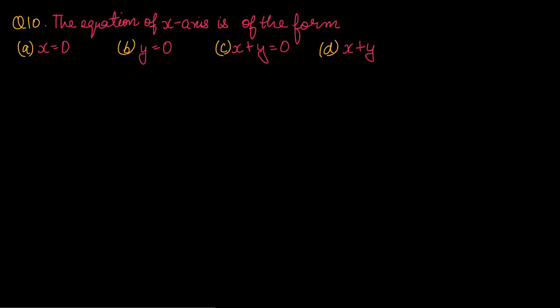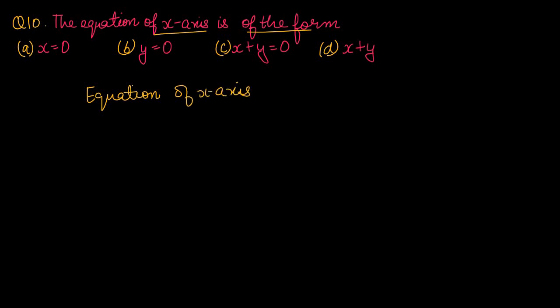Question number 10: the equation of x-axis is of the form? x-axis की property होती है कि उस पर ordinate हमेशा 0 रहता है, तो x-axis की equation है y equals to 0। Option number B is the right one.